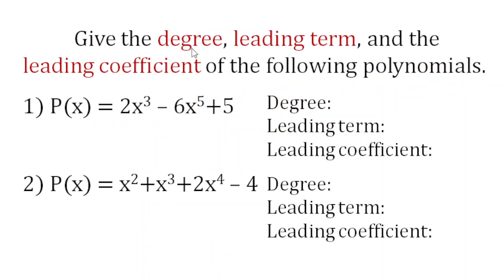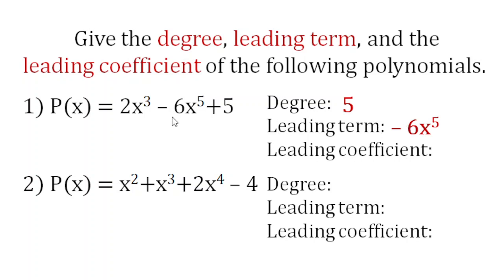The next terminologies we need to learn are degree, leading term, and leading coefficient. For the first polynomial, the degree is just the highest exponent, which is 5. The leading term is the term with the highest exponent: negative 6x to the power of 5. The leading coefficient is just its coefficient: negative 6. For polynomial number 2, the highest exponent is 4, so the degree is 4, the leading term is 2x to the power of 4, and the leading coefficient is 2.